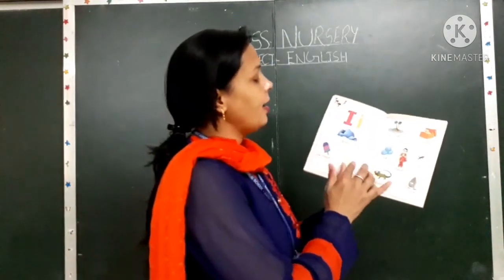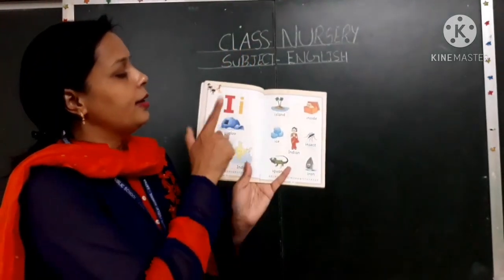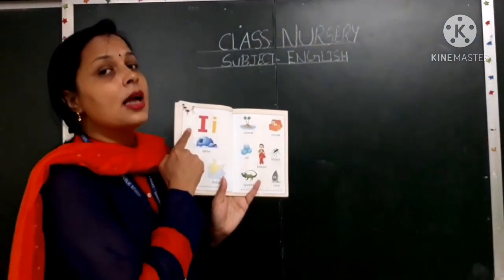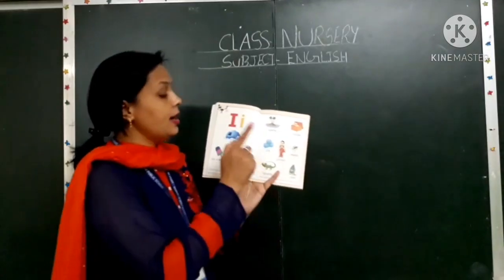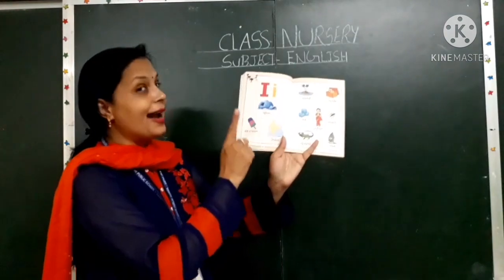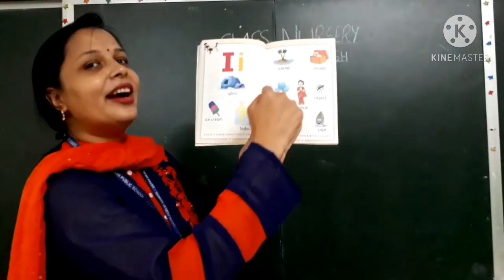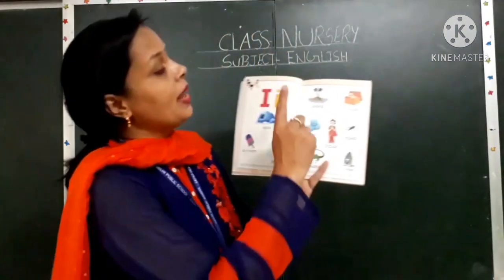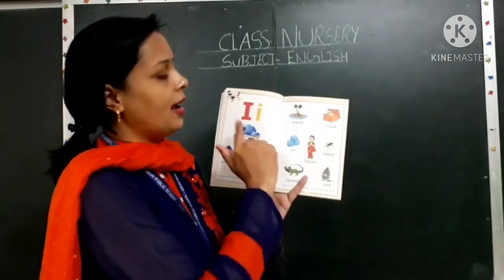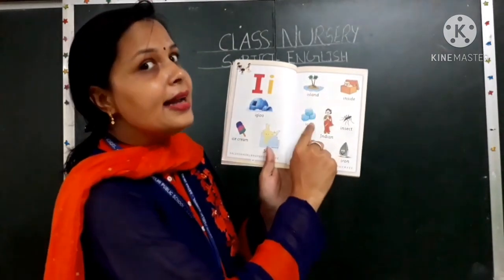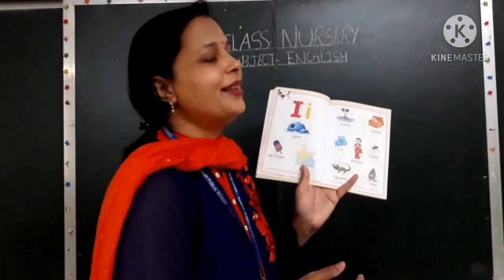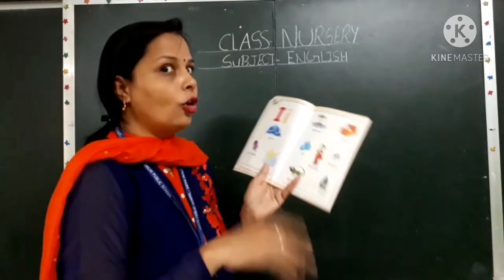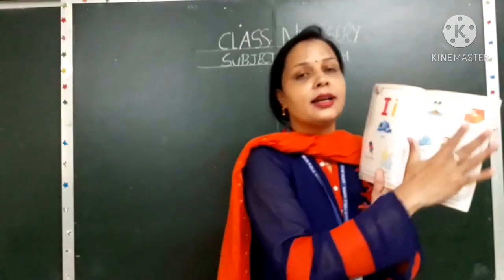Now go to letter I, page number 20. There is the letter I. Which letter is this? This is letter I. And the sound of I is 'i'. I — igloo. I — ice cream. I — India. We live in India, our country name is India. I — inside. I — ice cream, ice. Aapke fridge mein hoti hai ice cream. I — insect also. I — iron. Hot hot iron. Okay, these all the pictures are related to letter I.